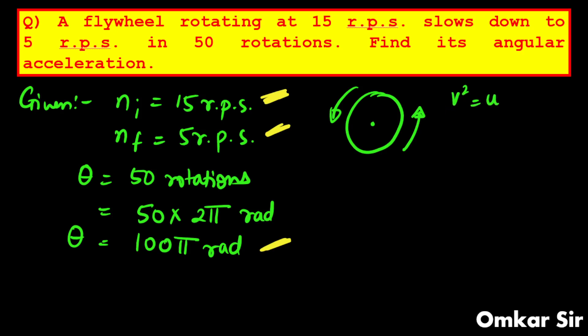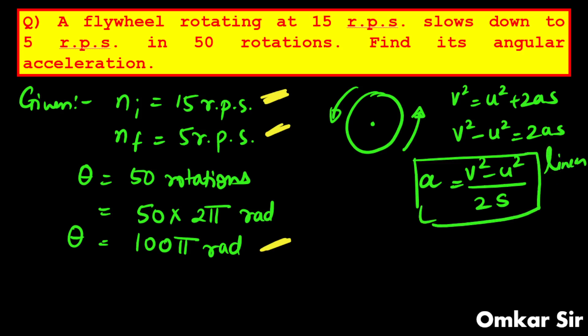So it is V² = U² + 2AS. Then acceleration on one side. In terms of linear, V² minus U² upon 2S also on the left-hand side. What is A? That is acceleration. The formula is in linear motion. And what is the analogy in rotational motion? It is alpha. V² which is ωf², that is final angular speed, minus ωi² upon 2 times theta. So we have to use this formula.